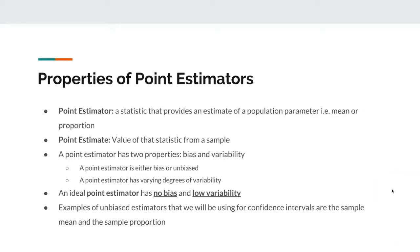A point estimator is a statistic that provides an estimate of a population parameter. A point estimate is the value of that statistic from a sample. A point estimator has two properties: bias and variability. A point estimator can be either biased or unbiased and has varying degrees of variability. An ideal point estimator has no bias and low variability. Examples of unbiased estimators that we will be using for confidence intervals are the sample mean and the sample proportion.